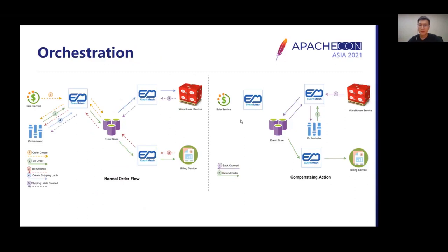EventMesh acts as an orchestrator among different services. Orchestrators also store state to know which steps of the workflow have occurred. Because of this, if there is a failure in the workflow, it can perform compensating actions to recover from that failure.